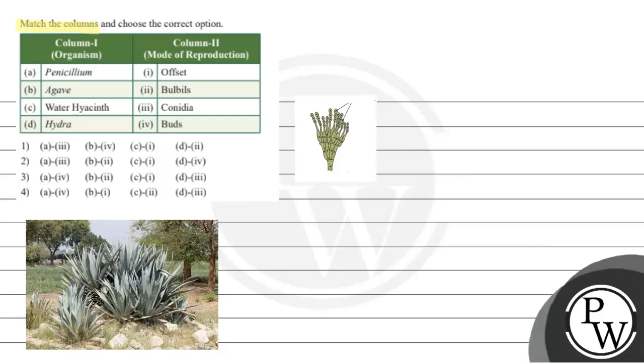Hello guys, let us read the question first. Match the column and choose the correct option. Here we have a column. There is an organism. There is column two. There is a mode of reproduction.